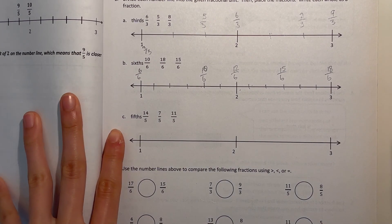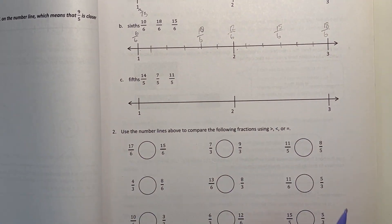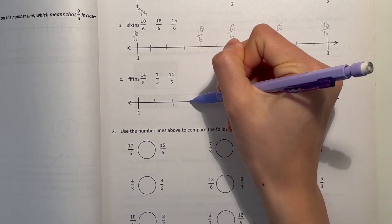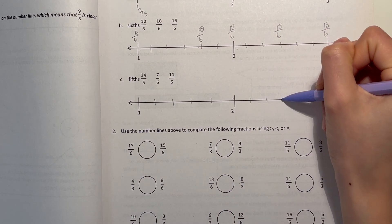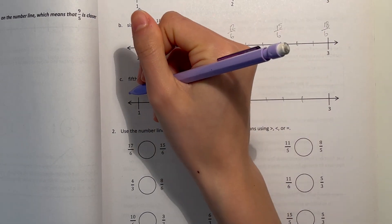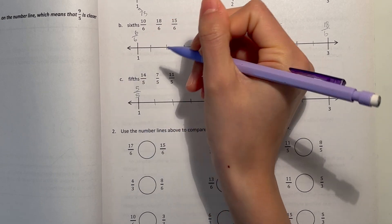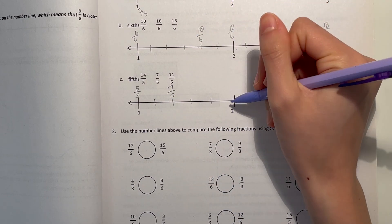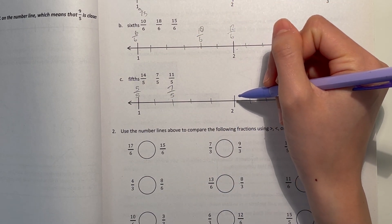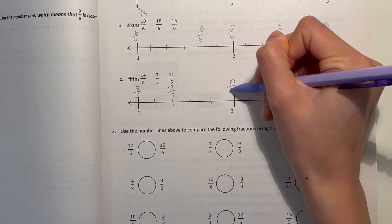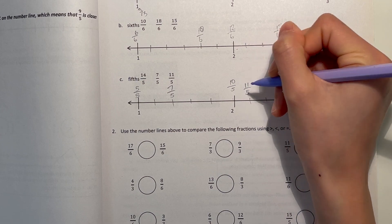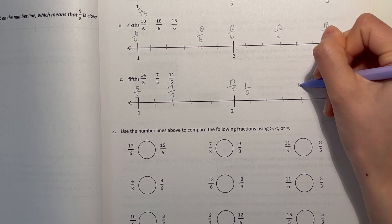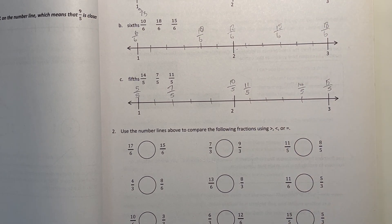Alright, C, we have fifths. So we have to split each section between the wholes into fifths. So 1 whole is 5 fifths. And here is 6, 7. So 7 fifths is right here. And 2 wholes is 2 times 5, 10 fifths. So right next to it, that would be 11 fifths. And 3 is 15 fifths. So here would be 14 fifths.